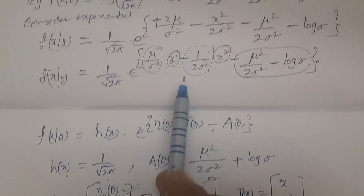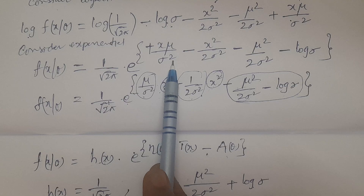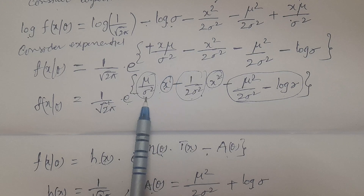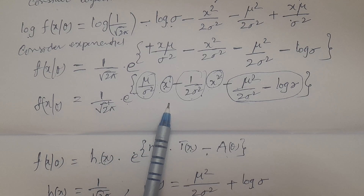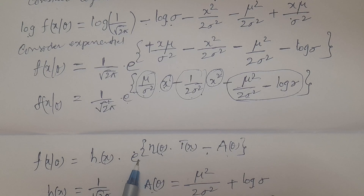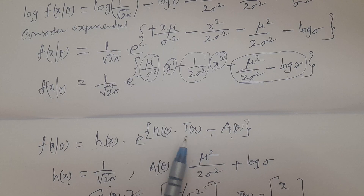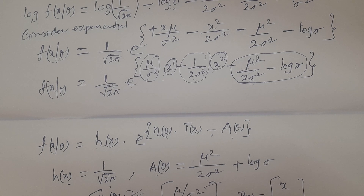Therefore, we have expressed the entire probability density function of the normal distribution in the form of the exponential family: h(x) · e to the power of [η(θ)·T(x) − A(θ)]. Therefore, the normal distribution belongs to the exponential family of distributions. Hope you understand. Thank you very much.